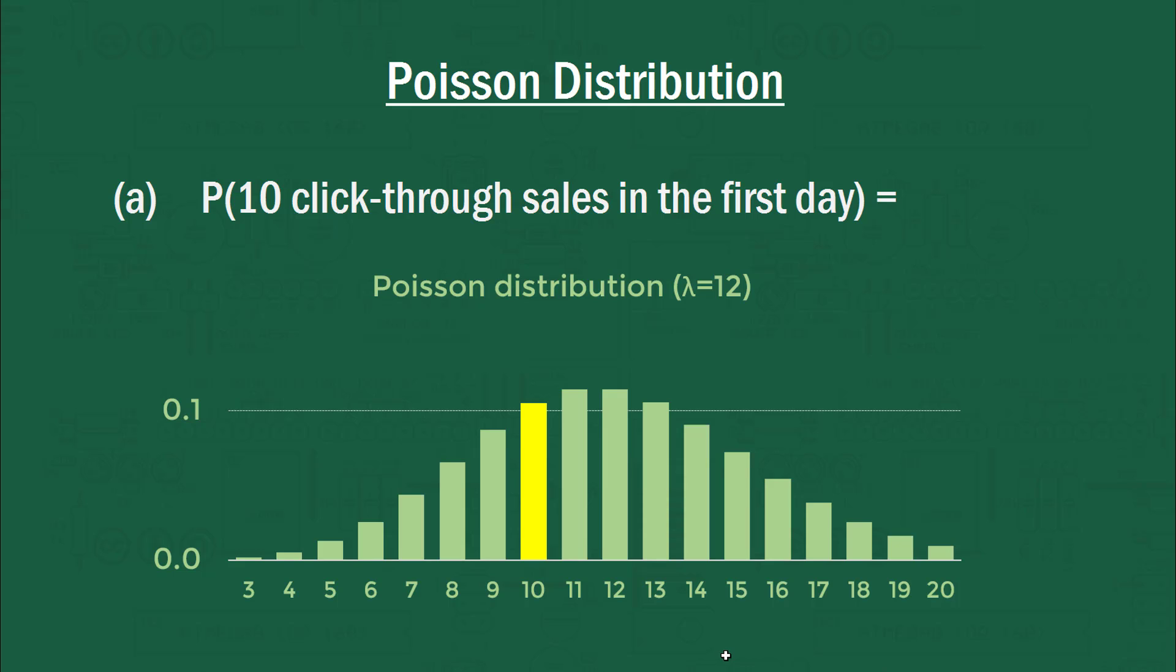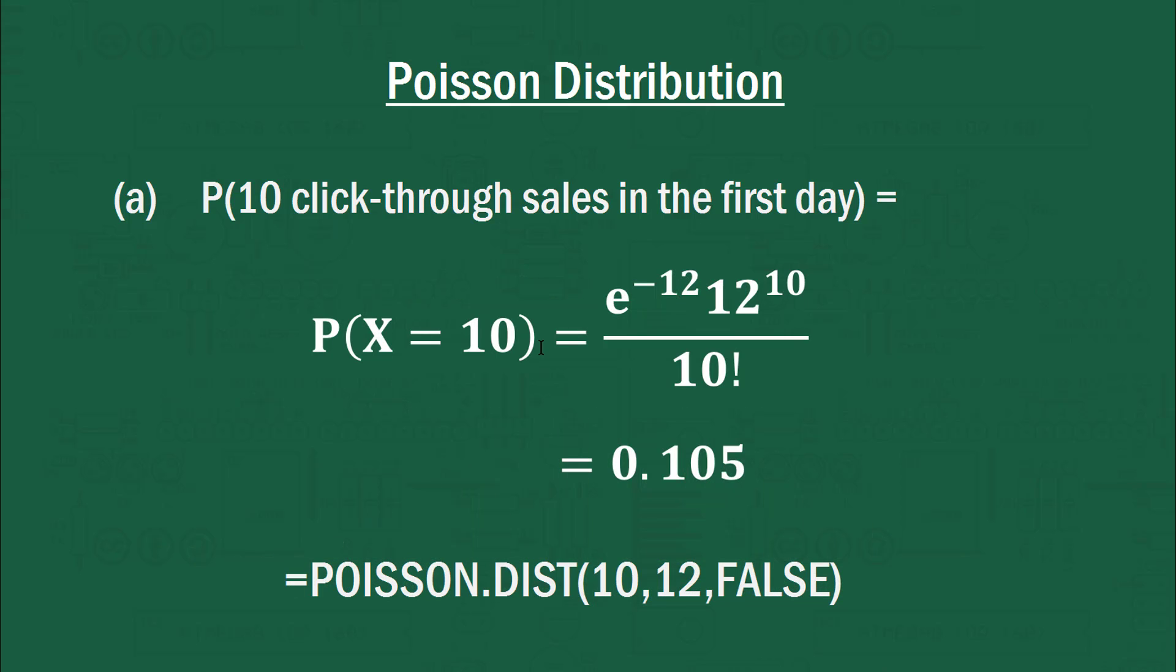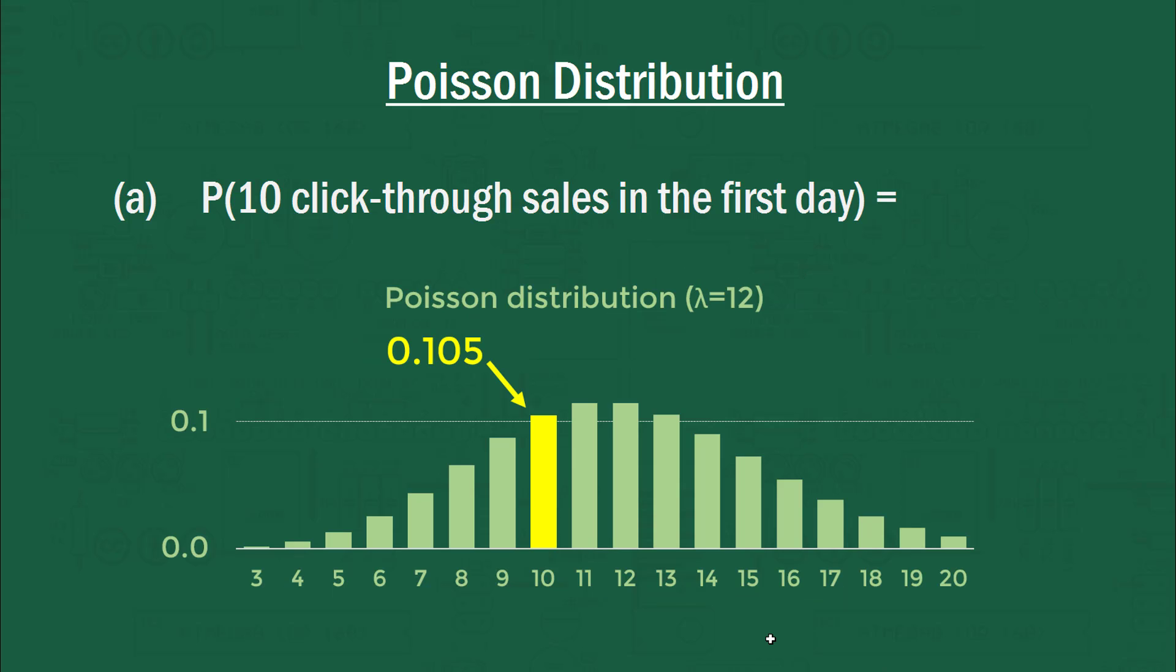So here's the answer to part A. The probability of 10 click-through sales in the first day is equivalent to the height of this bar here. Now, this is a poisson distribution where the mean is 12, lambda is 12. Of course, it goes a little beyond in this direction down to zero. And on this direction, it goes up to infinity. But how do we find the probability of that bar? We can use the formula for the PMF and just sub in those values for 12 being lambda and 10 being X. And we get a value of 0.105, which would be the same result if you've used equals poisson.dist and subbed in 10, 12, and false. So there's a 10.5% chance of getting 10 click-through sales in that first day. So there's the probability illustrated on the plot.